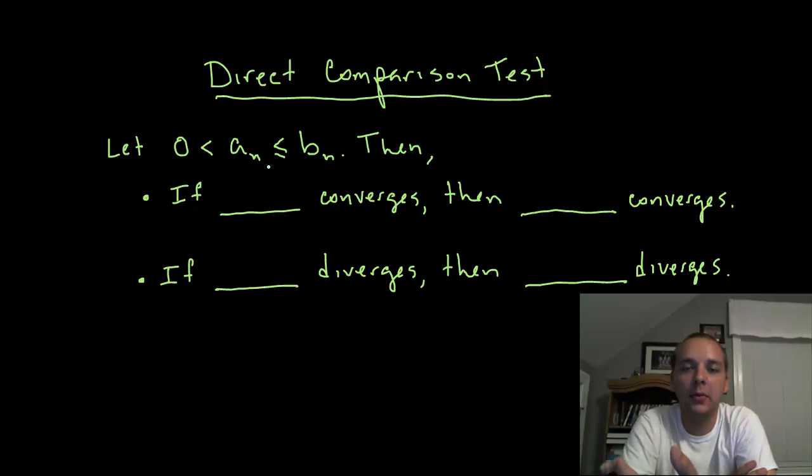One test that will help relate your series to a more well-known series is something called the Direct Comparison Test. It says if you have a sequence of terms a_n that's less than or equal to b_n, so b_n is always larger than whatever a_n happens to be, then we can say something about the convergence of one of these based off the convergence of the other.